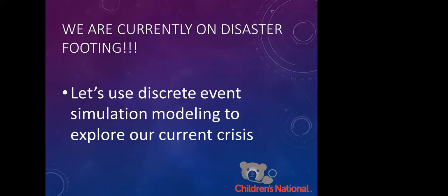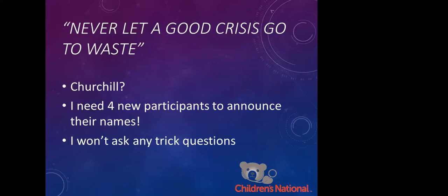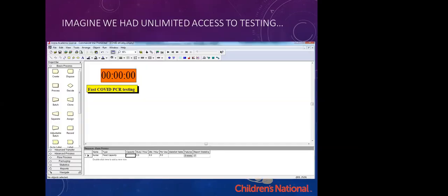A system can be as simple as an ATM or as complex as a global distribution network. Discrete event simulation models can help us understand the impact of previously implemented system changes and plan future changes to that system. They can also help us predict the impact of system stressors like a disaster. And we are currently on disaster footing. So I think the five of us should now use discrete event simulation modeling to explore our current crisis. Never let a good crisis go to waste, which we won't today.